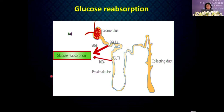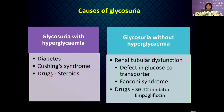In normal circumstances, almost all glucose filtered through the glomerulus is reabsorbed at the proximal tubule by sodium-dependent glucose co-transporter proteins. Glycosuria can occur with or without hyperglycaemia. With hyperglycaemia, the plasma glucose concentration exceeds the renal threshold and glucose appears in the urine, as seen in diabetes, Cushing's syndrome and steroid therapy.